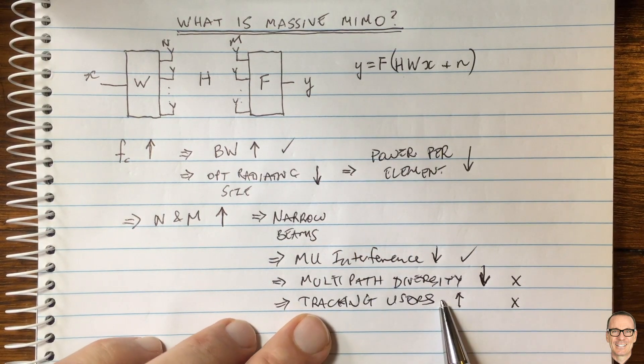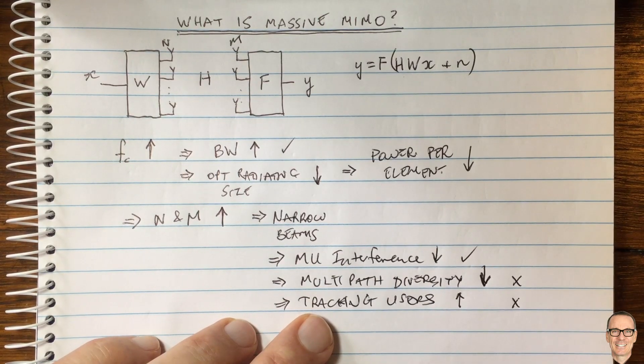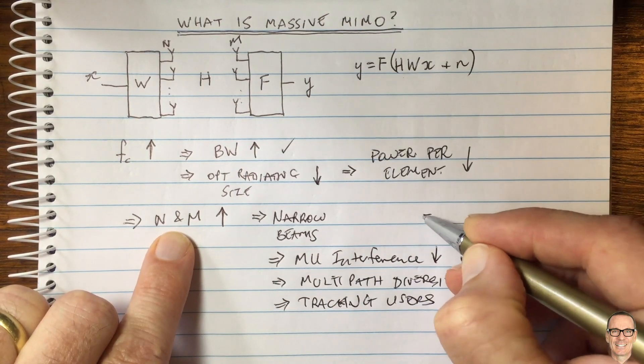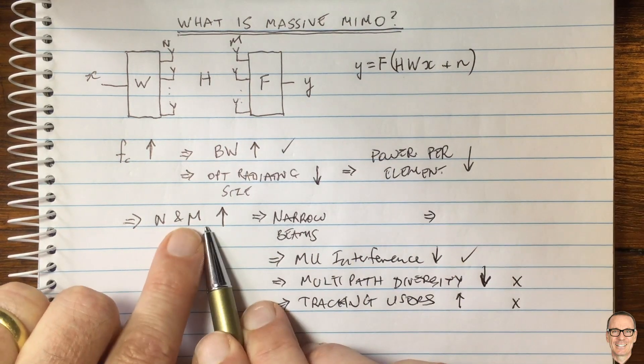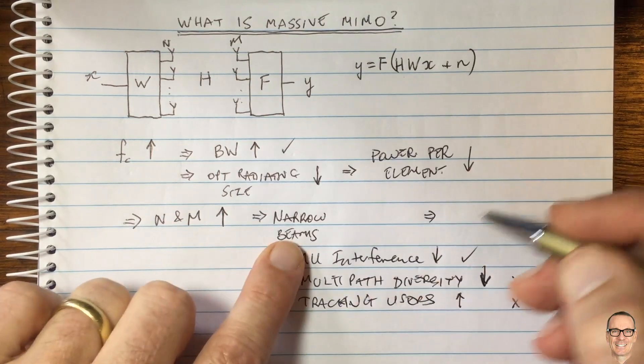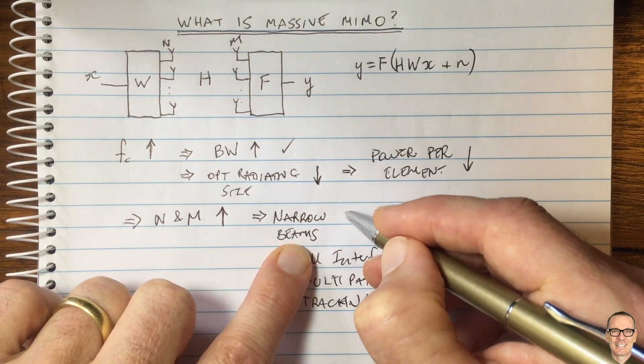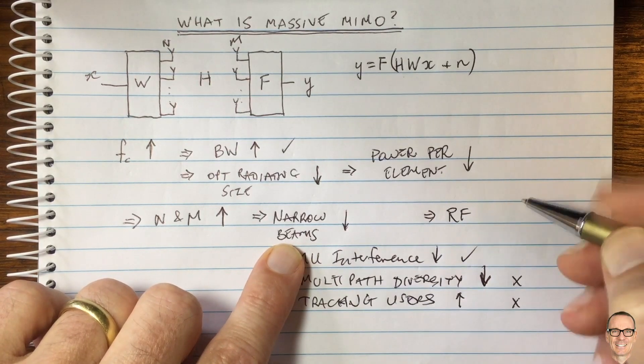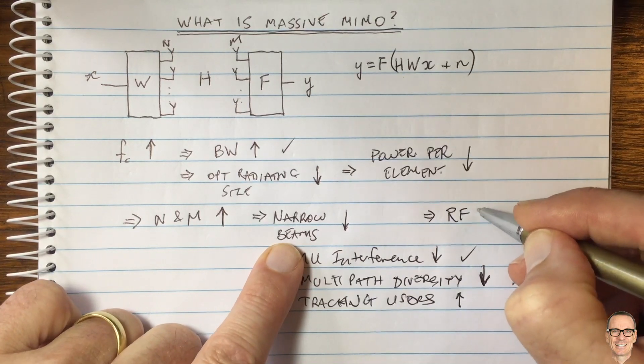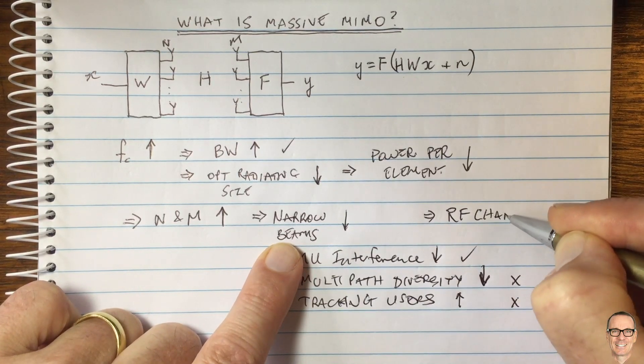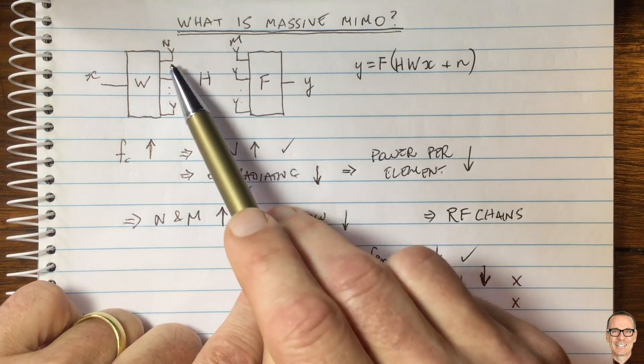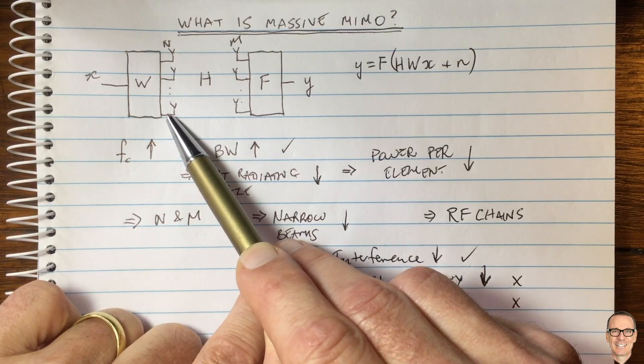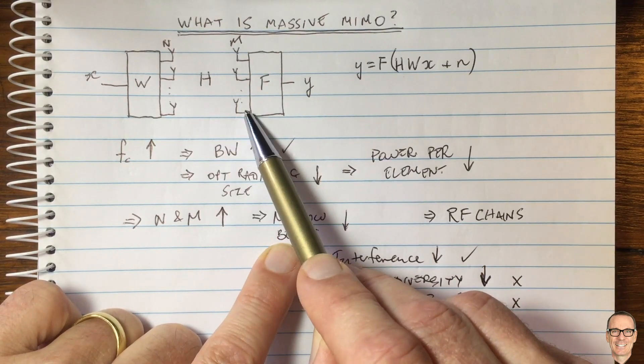There's one other of the probably most important trade-offs from having massive numbers of antenna elements. As the number of antenna elements goes up, narrow beams happen, and the other result of having more elements is that you need more RF chains. That means amplifiers. For standard MIMO, you need an amplifier for every single transmit antenna and an amplifier for every receive antenna.